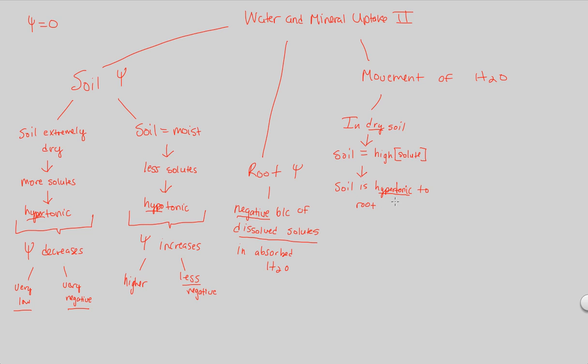The root has less solutes. It has more solvents. It's a hypotonic root. And, the soil is hypertonic. So, now, what's going to happen here? Why do we have to water plants, essentially? Well, that's because the water itself does not move into the root, okay? Water does not move into root from soil.